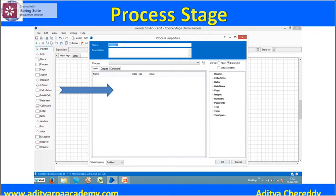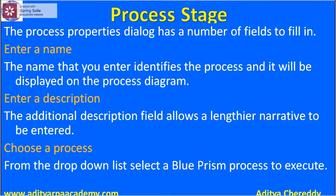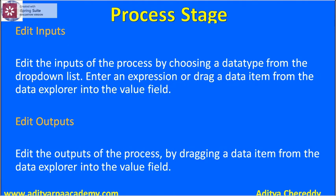There you can see fields like name, description, inputs, outputs, and conditions. You can enable the name and description, and then from the drop-down list you will set up which process to execute.